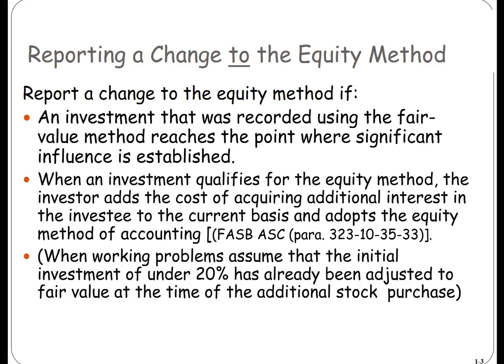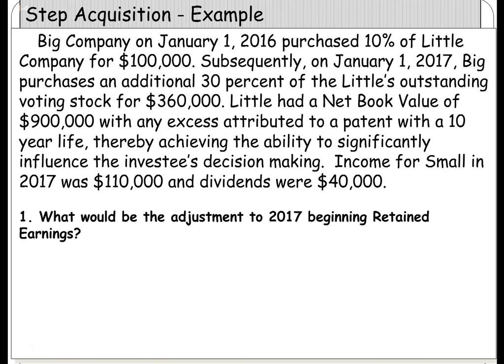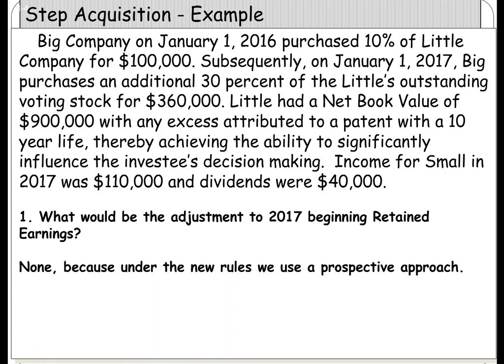Let's look at an example. Big Company on January 1st, 2016 purchased 10% of Little for $100,000. Subsequently, on January 1st, 2017, Big purchased an additional 30% of Little's outstanding voting stock for $360,000. Little had a net book value of $900,000 on January 1st, 2017, and any excess was attributed to a patent with a 10-year life. They therefore achieved the ability to significantly influence the investee's decision-making. Income for Little in 2017 was $120,000, and they paid dividends of $40,000. Under the new rule, we go prospectively — not retroactively.